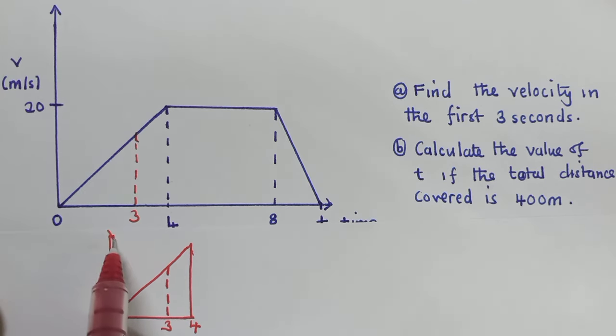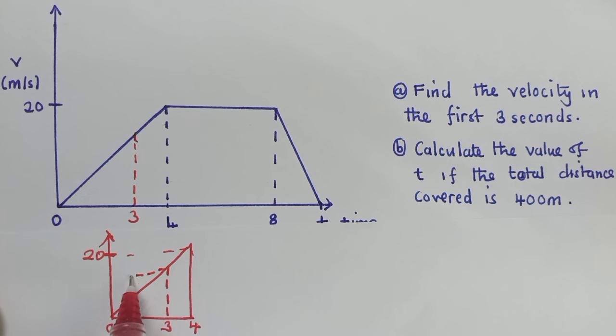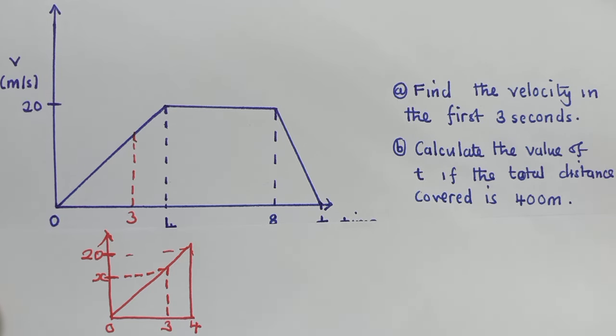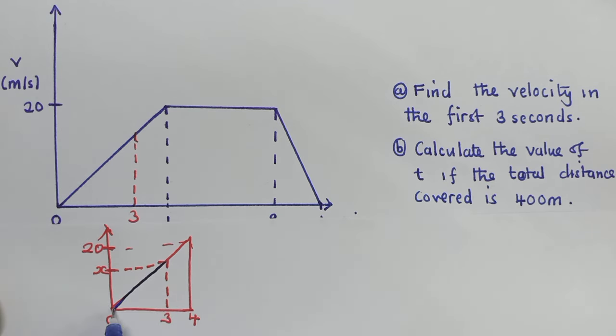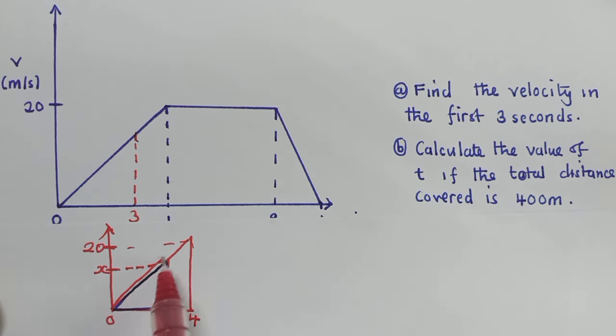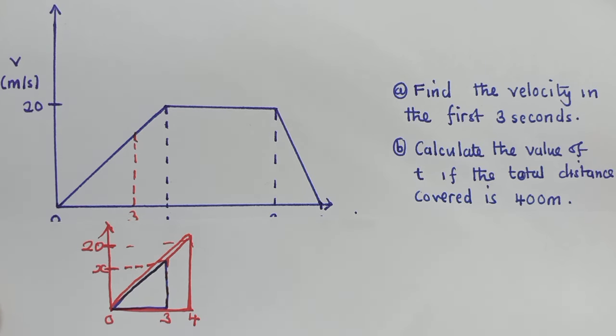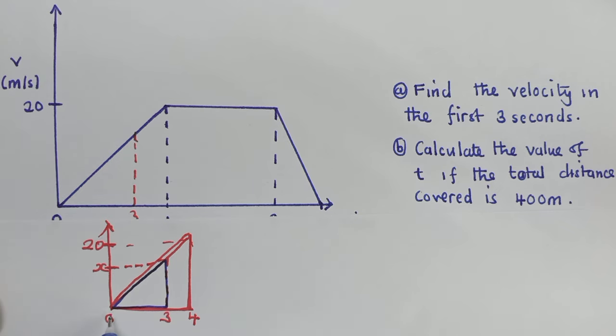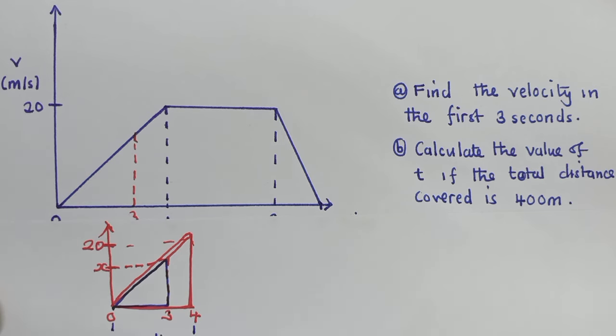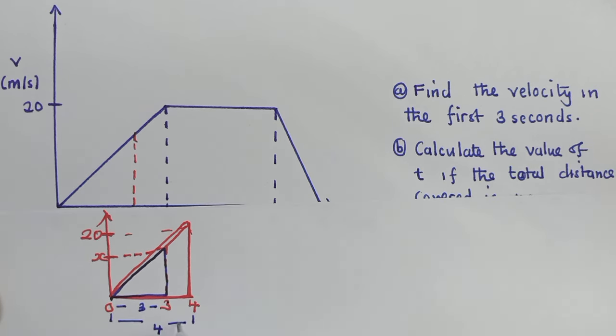And then you show where three seconds is, right here. Four seconds is over here. Here it's zero. This side is where we have the velocity, and here it's 20. So now, what you've been asked to find is the velocity here. We don't know. Now we are going to use the idea of similarity. We have this triangle right here, and there is also the bigger triangle outside here. There are two triangles.